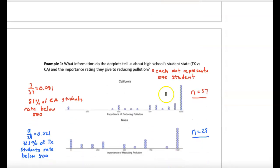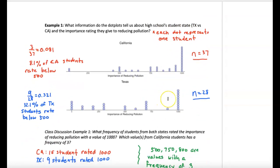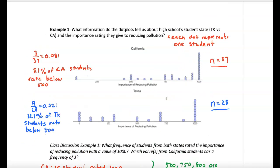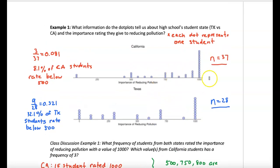Here's an example with some calculations on the side. You'll see a distribution comparing California and Texas. These are 37 people surveyed in Texas, 28 in California. This happens to be high school students rating the importance of reducing pollution.